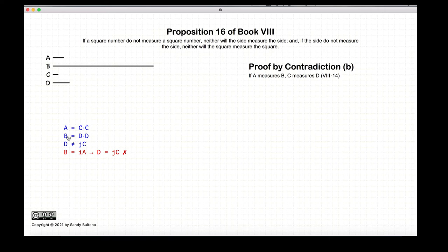We're going to demonstrate this again by contradiction, so we're going to assume that A measures B. But again from Proposition 14, if A measures B, then C measures D.